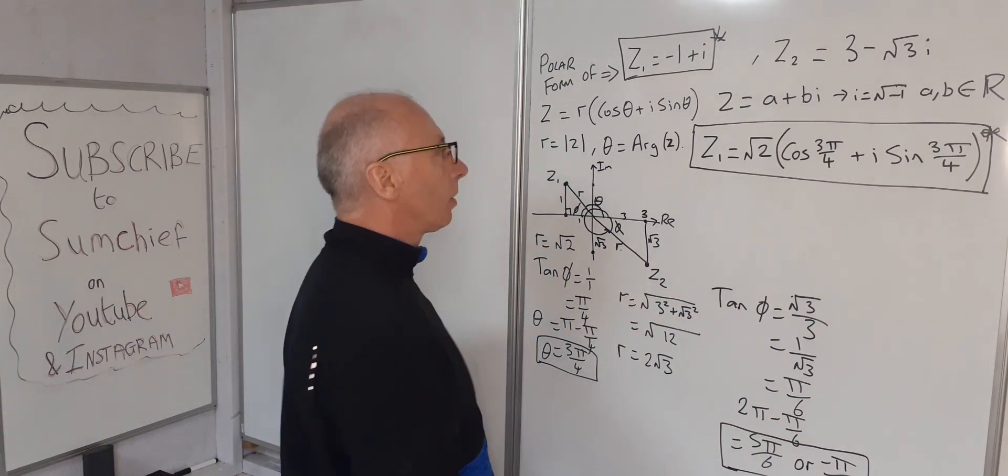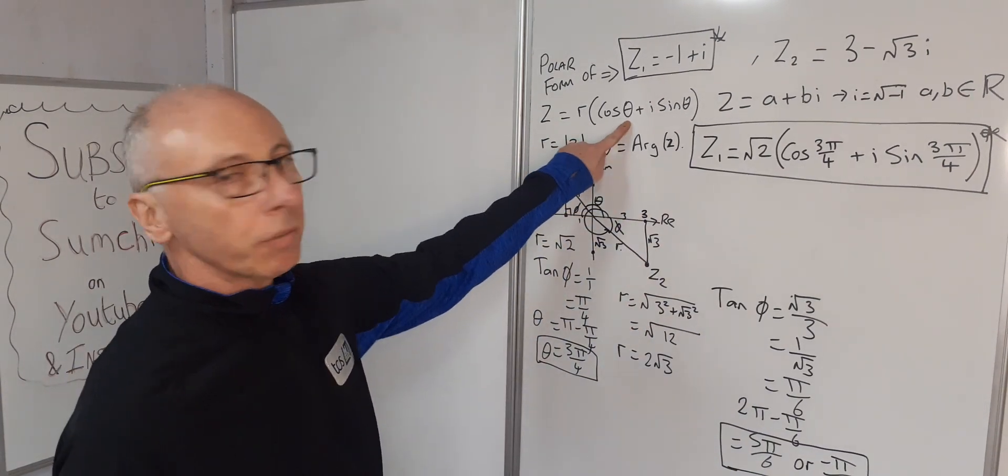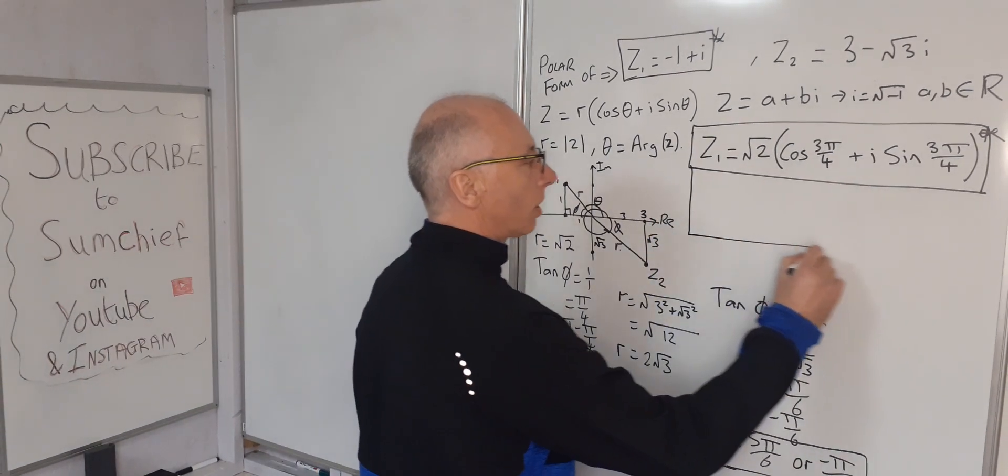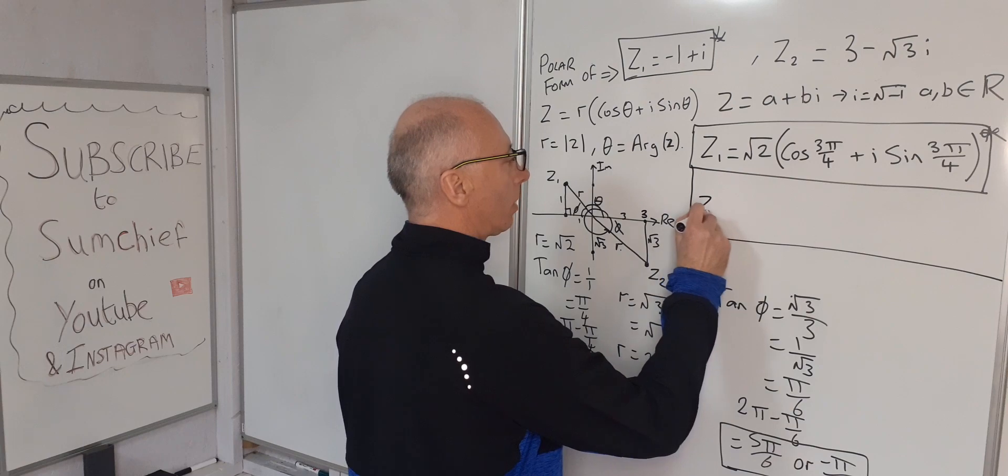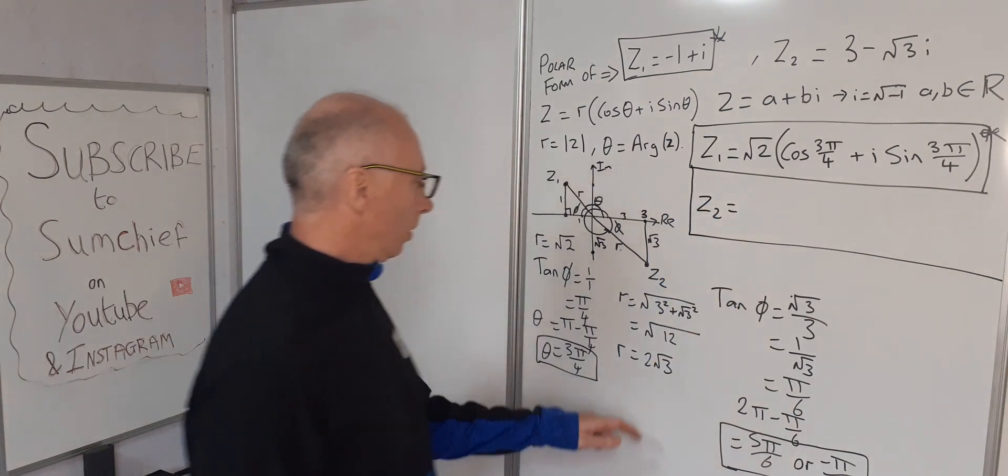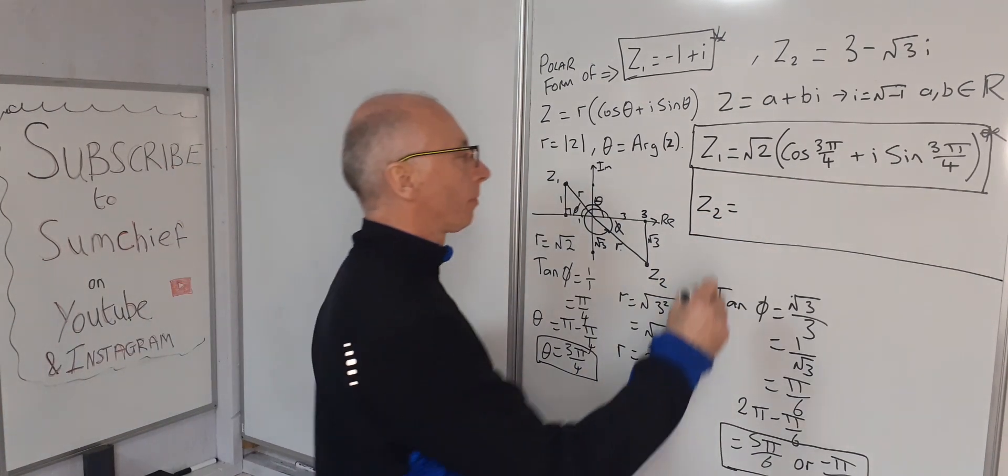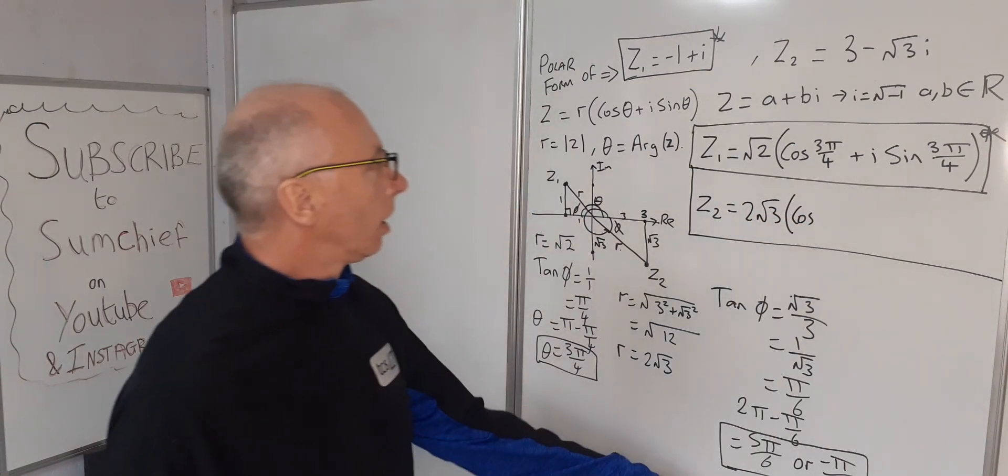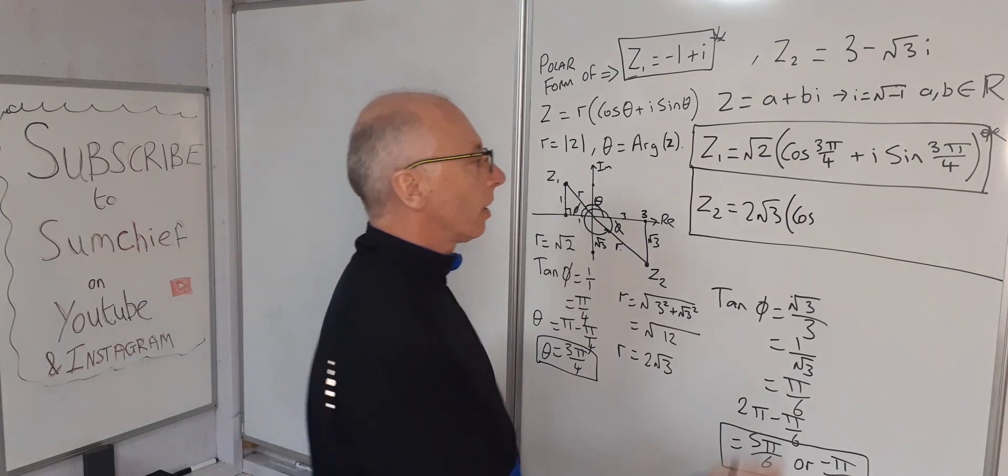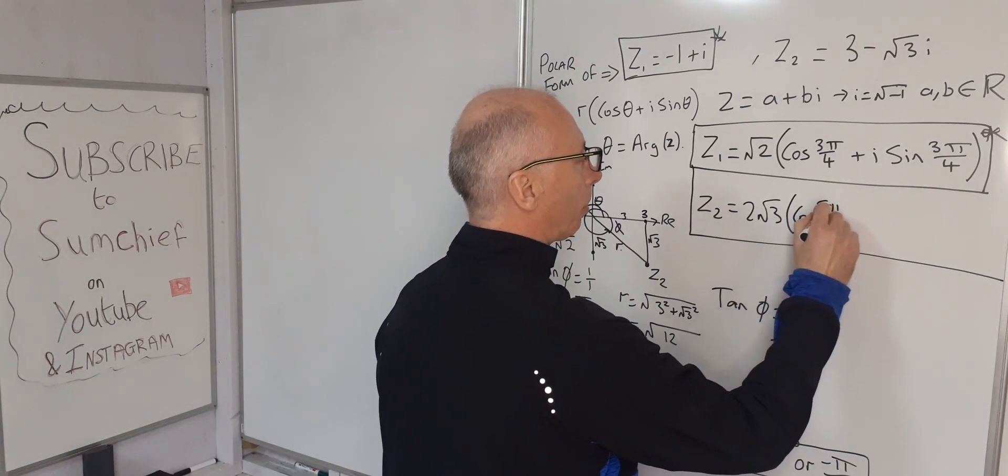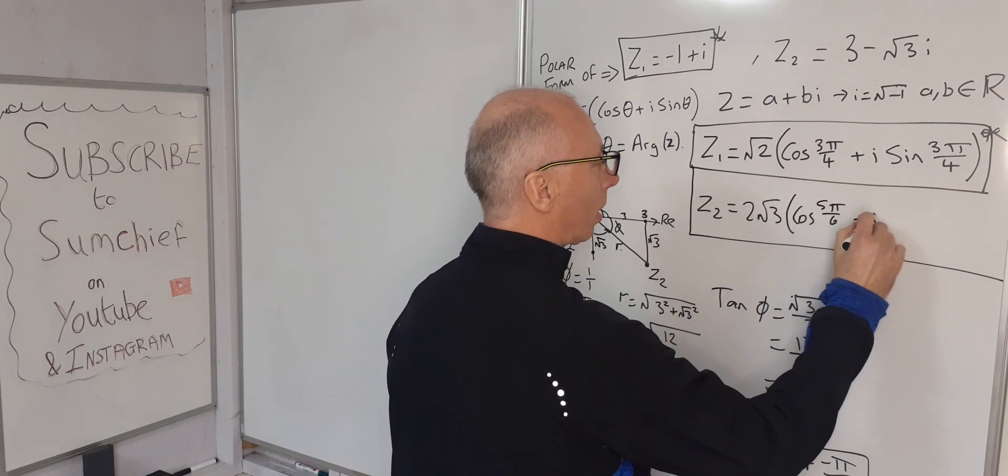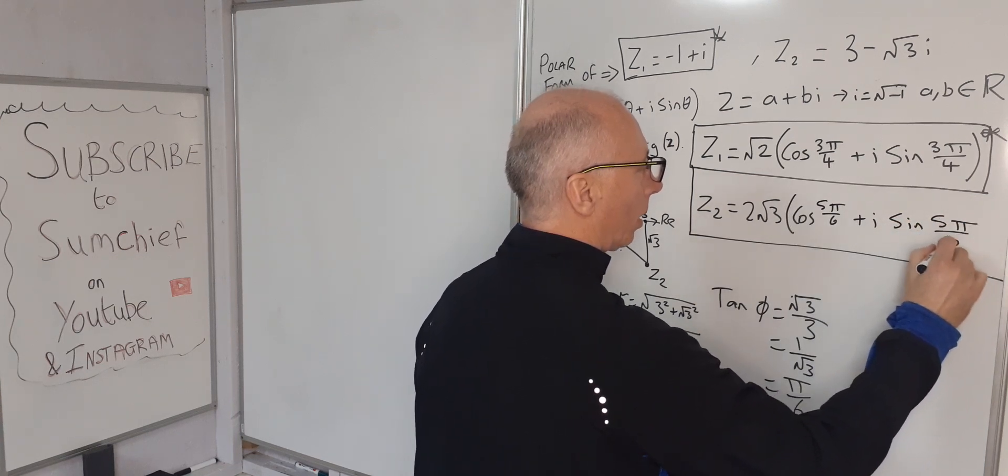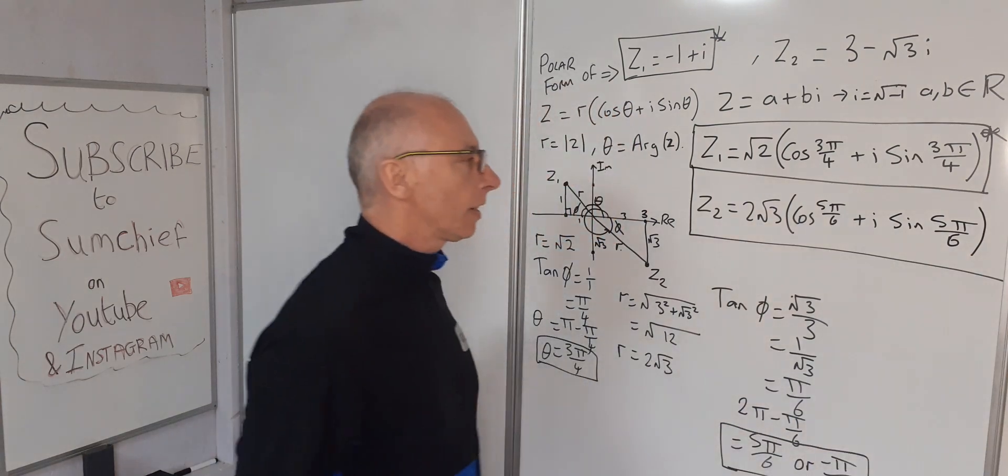Let's write this up now. We've got our r and our θ. So we can say z₂ = 2√3(cos(5π/6) + i sin(5π/6)). And that is our answer.